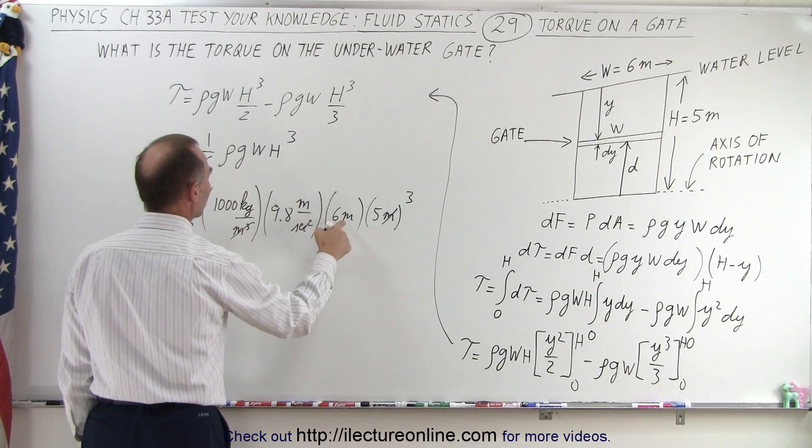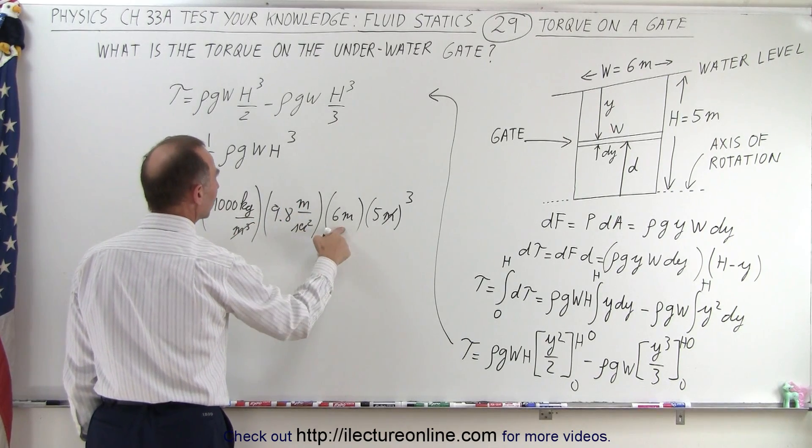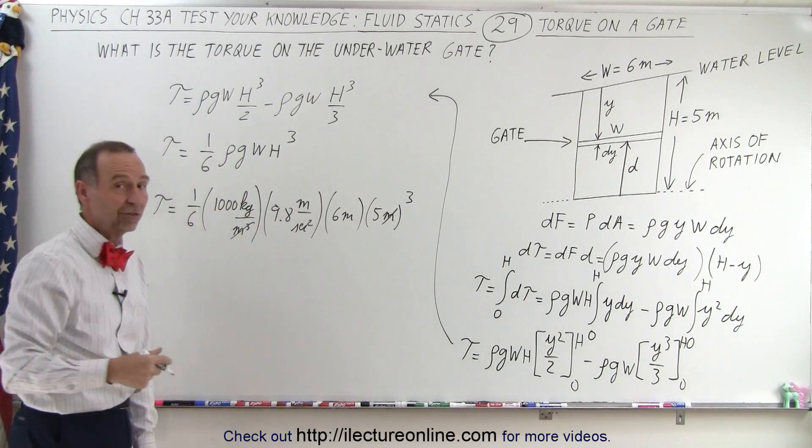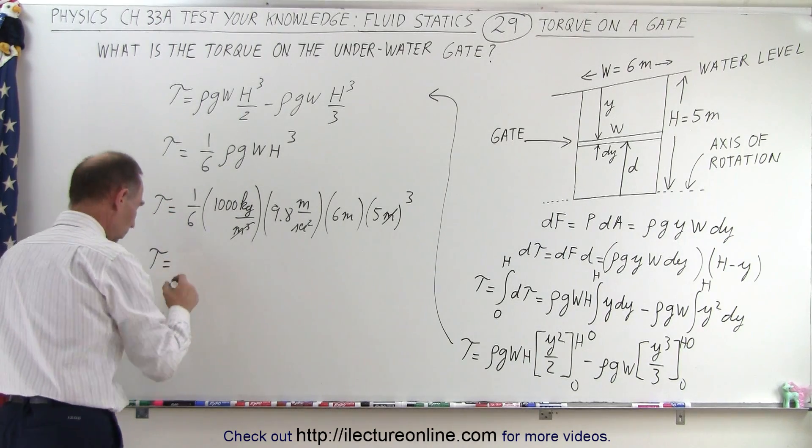Meters times meters which is meters squared, kilograms meters per second squared is Newton, Newton meters, well Newton meters is the units of torque. All right that gives the right units.